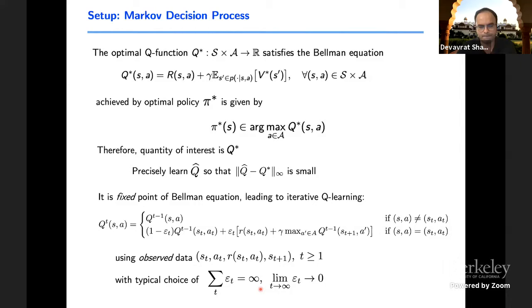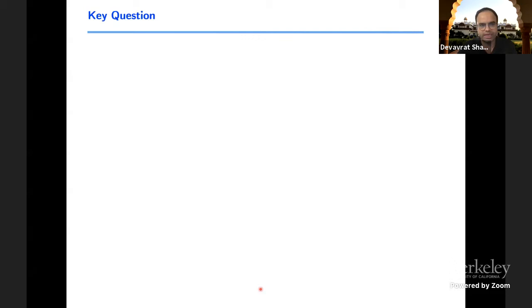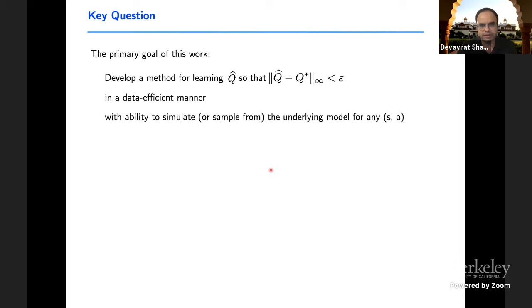If I am observing data in terms of sequence of states, actions, rewards, and then the next states, then I could iteratively update my Q function estimate by simply looking at equations such as this. You want to choose the right step size so that convergence happens, but at the same time accumulation happens as well.